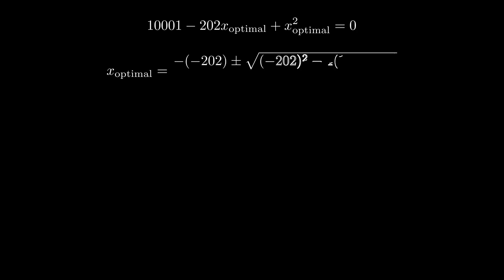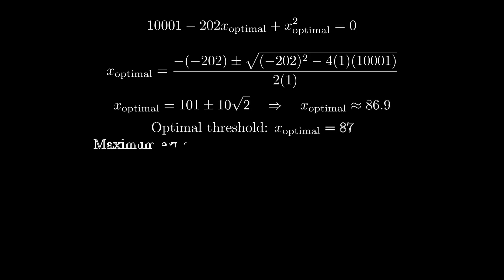Using the quadratic formula, we get the optimal threshold of x is equal to 87. This corresponds to the maximum expected winnings of about 86.36 dollars.